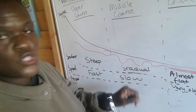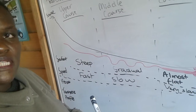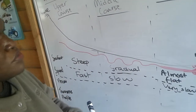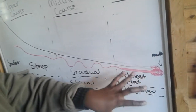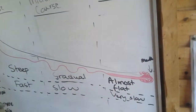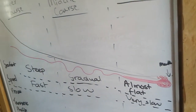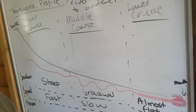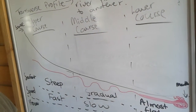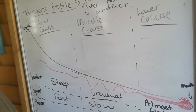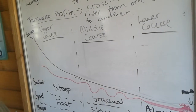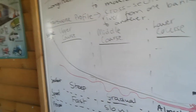In the middle course, the river starts to bend — you start to have those meanders. Then as the volume of the water increases towards the mouth, we know we are approaching the end of the river.